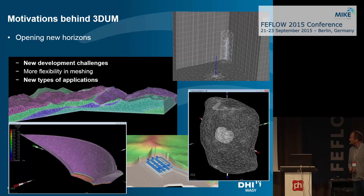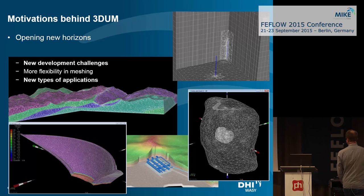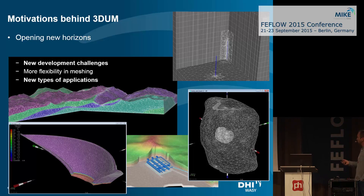On top of that, it also opens the door to new types of applications. More flexibility in meshing means more flexibility in honoring the geological data. We are also now more flexible to deal with geotechnical problems, definition of structures, meshing of structures — whether it be subsurface, underground storage, refinement around wells. Being able to break the layered mesh approach and go full 3D, fully unstructured.